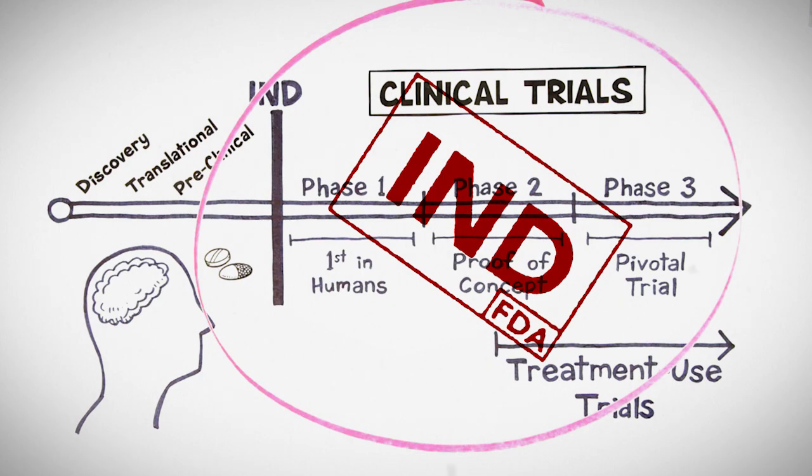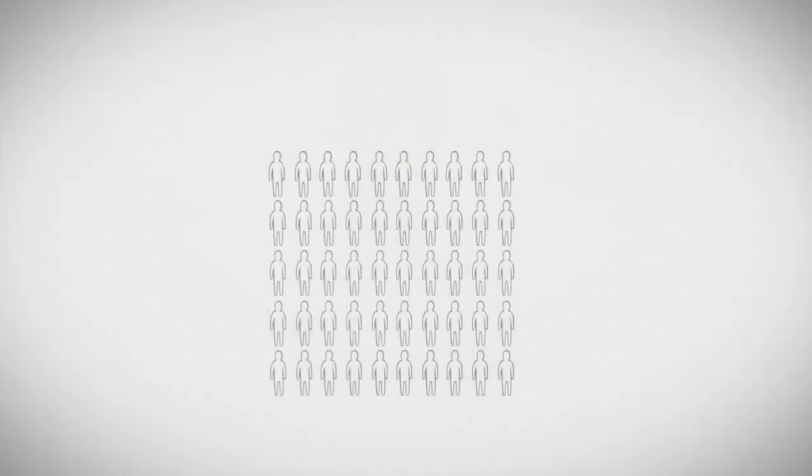Since 1962, this is how the FDA oversees the development of new drugs. A trial can either be primarily for research or primarily for treatment use. Research trials are the kinds of clinical trials we hear about all the time. They're required for generating the data to prove a product is ready for market.